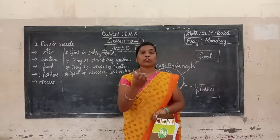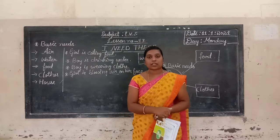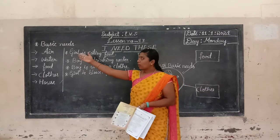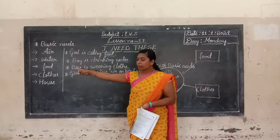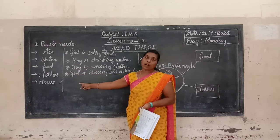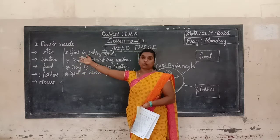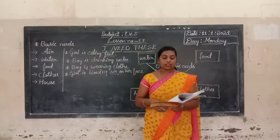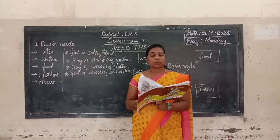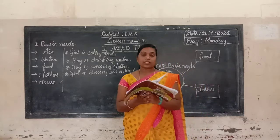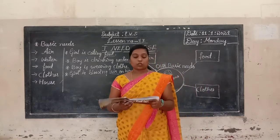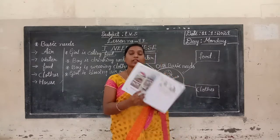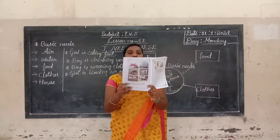Children, tell me which are your basic needs. Our basic needs are air, water, food, clothes, and house. These are our basic needs. Next we go to page number 87. Here we have some animal pictures.